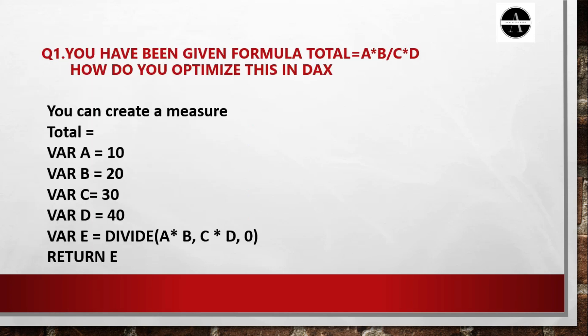The first question, which is a scenario-based question, is: you have been given a formula — total is equal to A multiplied by B, divided by C multiplied by D. How do you optimize this in DAX?